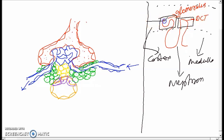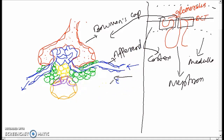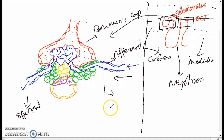When we take a transverse section and move through it, this part is the Bowman's capsule. This part is the afferent arteriole part — the blood flows into this. The part where blood is leaving is the efferent part.